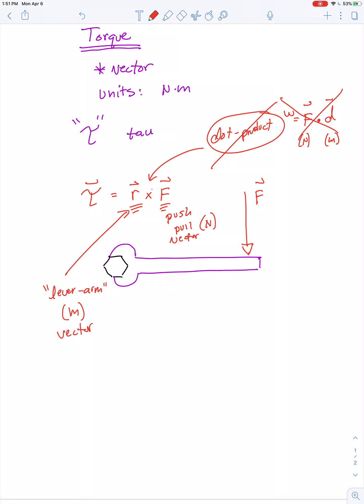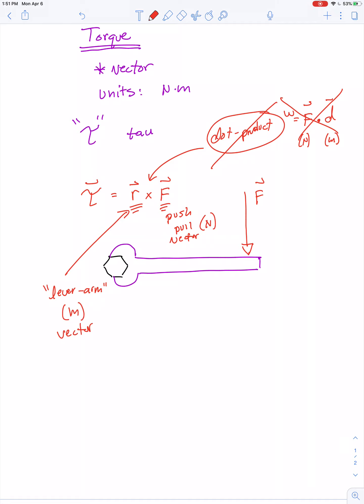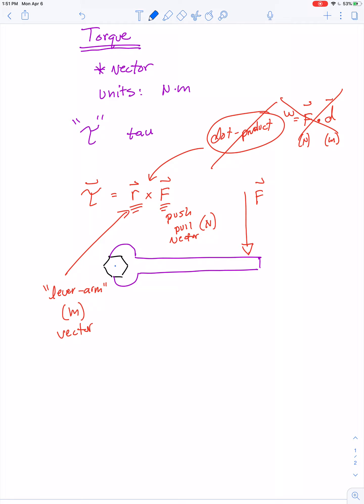Here, we're taking the cross product of force and lever arm. Lever arm is defined as the distance from the axis of rotation. So if this bolt is going to rotate, it rotates about a point at its center.